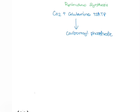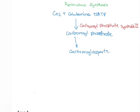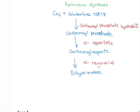In the de novo pathway, we start with carbon dioxide and glutamine, and this requires two ATP molecules to make carbamyl phosphate. This occurs in the presence of an enzyme called carbamyl phosphate synthase 2. After this reaction, aspartate donates an aspartate group to form carbamyl aspartate, which is then involved in the formation of dihydroorotate by the removal of water.